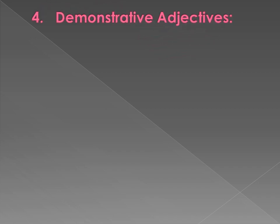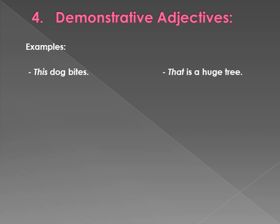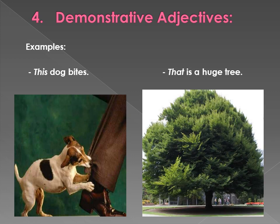Fourth type of adjective is demonstrative adjective. These adjectives demonstrate the position or situation of the noun. For example: 'This dog bites. That is a huge tree.' 'This' and 'that' are demonstrative adjectives. 'This dog bites' means this particular dog bites — not all dogs. 'That is a huge tree' means this particular tree is very huge.